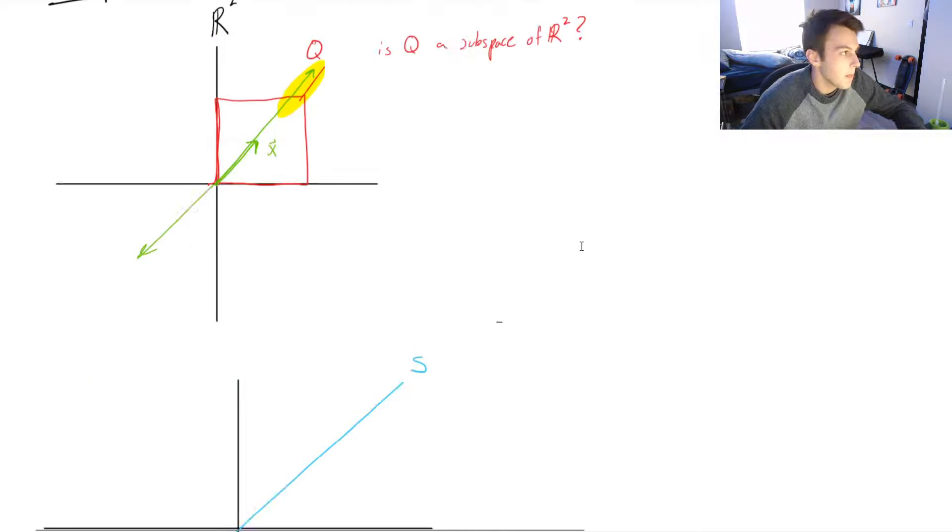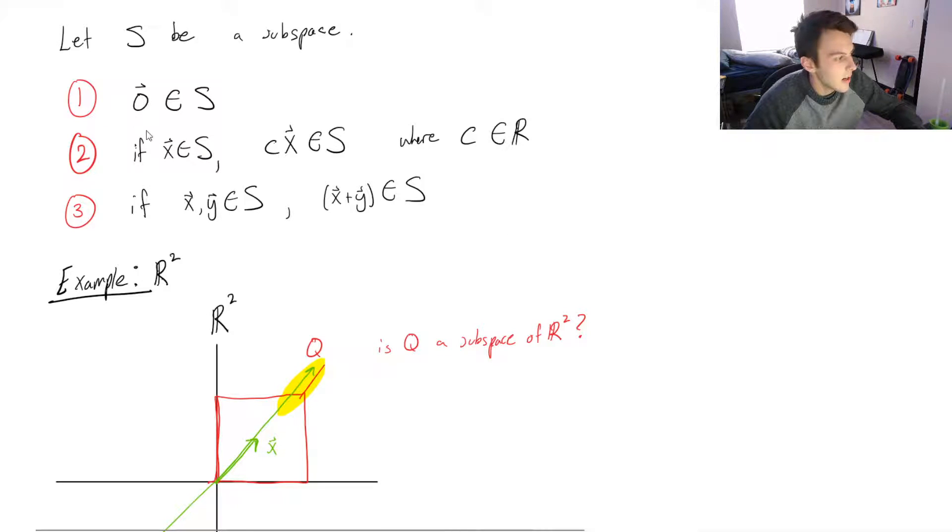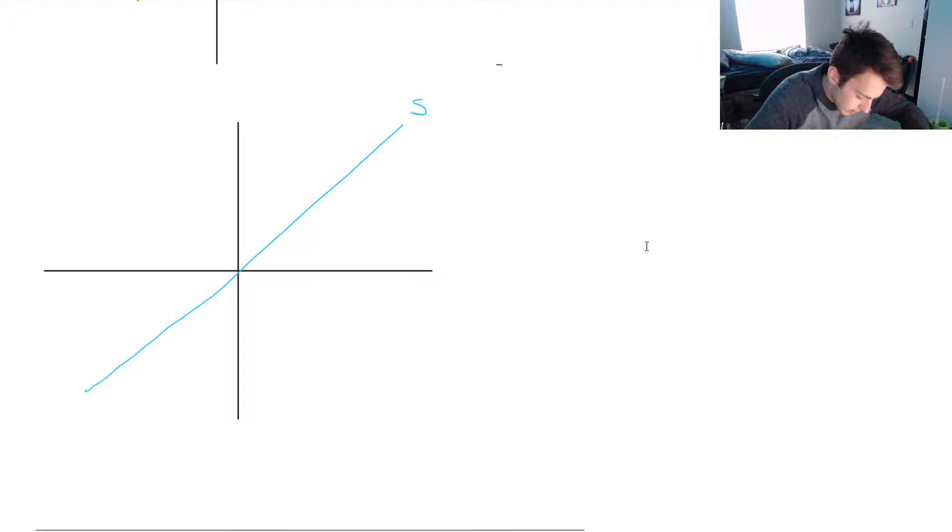The next one. If I took any vector S and I scaled it, would it also be on S? So let's say this is X. If I were to scale that, no matter how much I scale it by, it's always going to be on that line, which is S. Which means that the next condition is also passed.